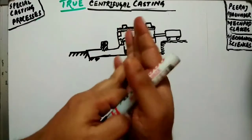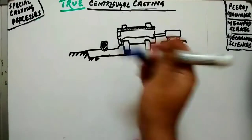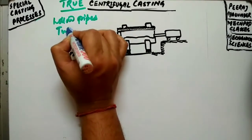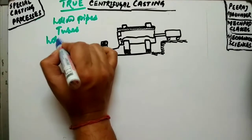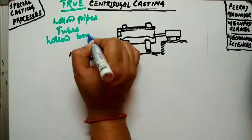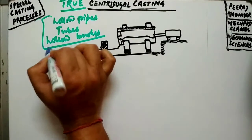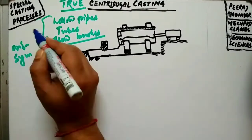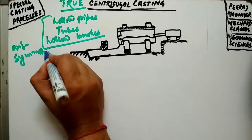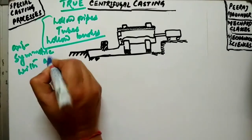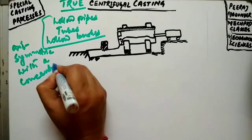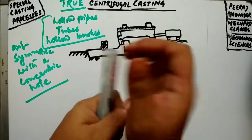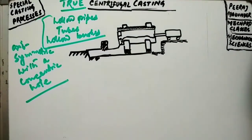True centrifugal casting is generally very useful for making hollow pipes, tubes, and hollow bushes. These are all axisymmetric in nature with a concentric hole.